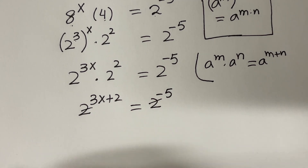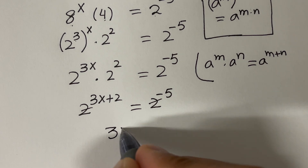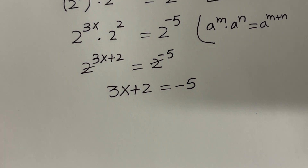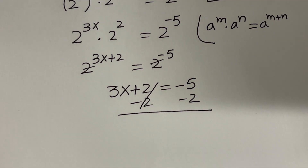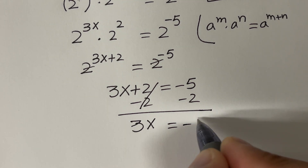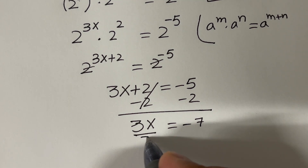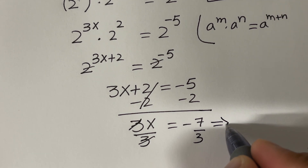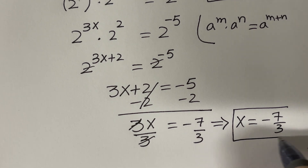Finally, since we have the same base on both sides, we can equate the exponents: 3x plus 2 equals negative 5. We want to find x, so subtract 2 from both sides. Therefore 3x equals negative 7, and dividing both sides by 3 gives x equals negative 7 divided by 3.